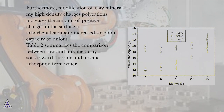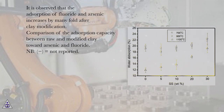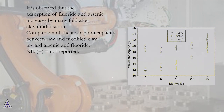Table 2 summarizes the comparison between raw and modified clay minerals toward fluoride and arsenic adsorption from water. It is observed that the adsorption of fluoride and arsenic increases by many fold after clay modification. Note: Nb (−) equals not reported.